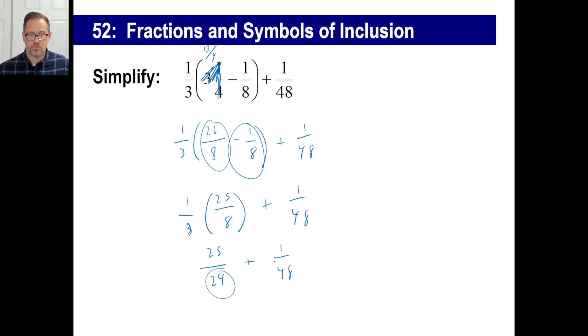All right, well, twenty-four and forty-eight, of course, the common denominator will be forty-eighths, because twenty-four goes into forty-eighths twice. So twenty-five over forty-four is going to be the same thing as fifty over forty-eighths. Plus one over forty-eighths will be fifty-one over forty-eighths.